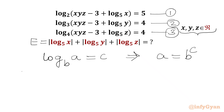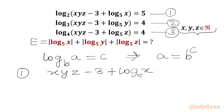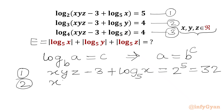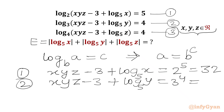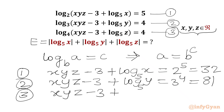So we can write our first equation in exponent form: xyz minus 3 plus log x base 5, equal to 2 raised to the power 5, which gives value 32. Similarly, the second equation: xyz minus 3 plus log y base 5, equal to 3 power 4, value will be 81. And the third equation in exponent form: xyz minus 3 plus log z base 5, equal to 4 power 4, value will be 256.